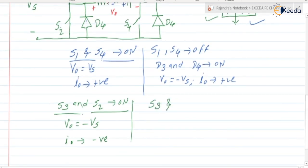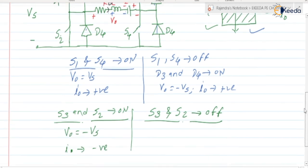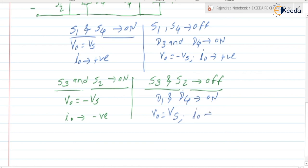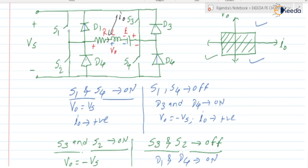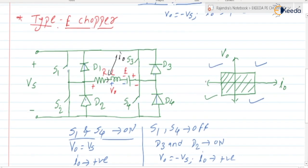Next, when S3 and S2 are in the off state, whatever energy is stored by the inductor will be released through diodes D1 and D2 — note: D2 instead of D4. D1 and D2 will be in the on state. V0 is equal to Vs and I0 is negative. So this gives the second quadrant operation.